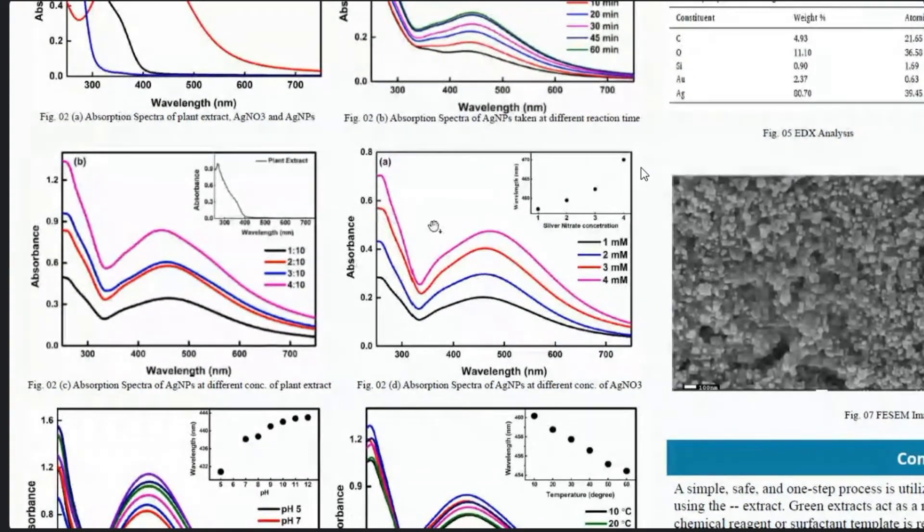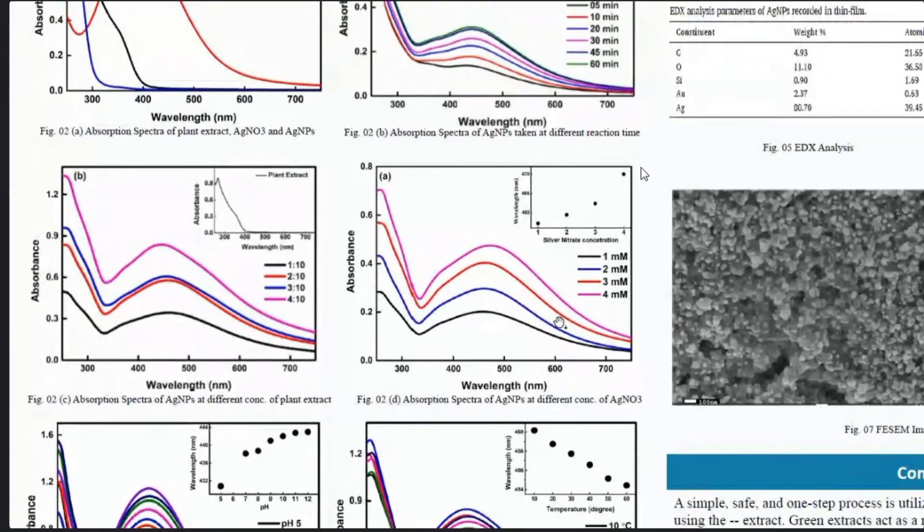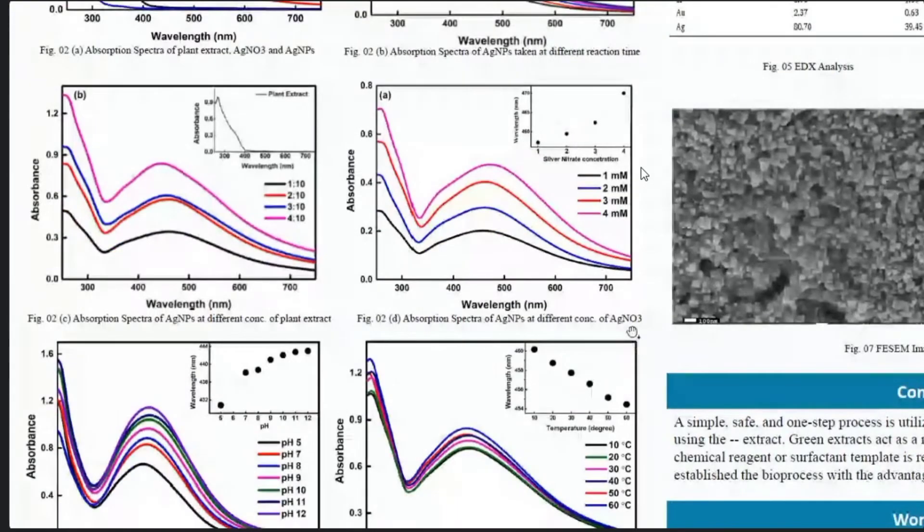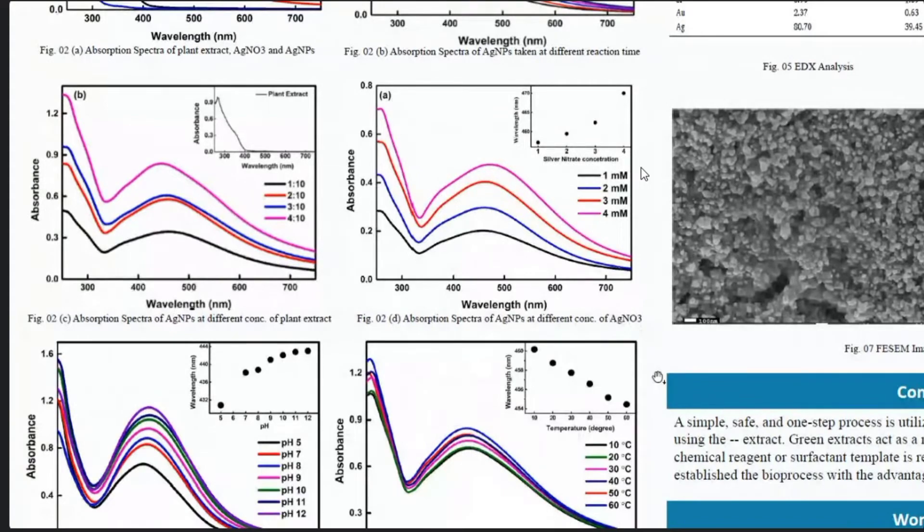This is a variation with the increase of AgNO3. With increasing AgNO3, more Ag+ ions are present in the solution, so the intensity increases on increasing the concentration of AgNO3.